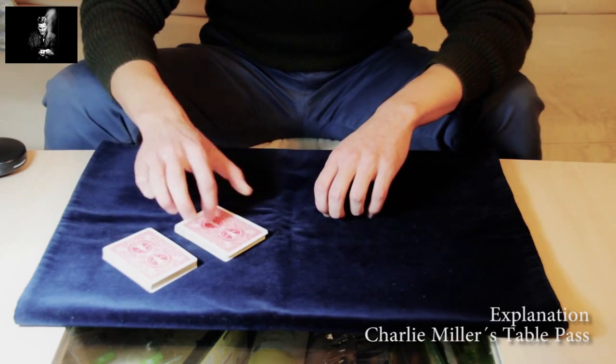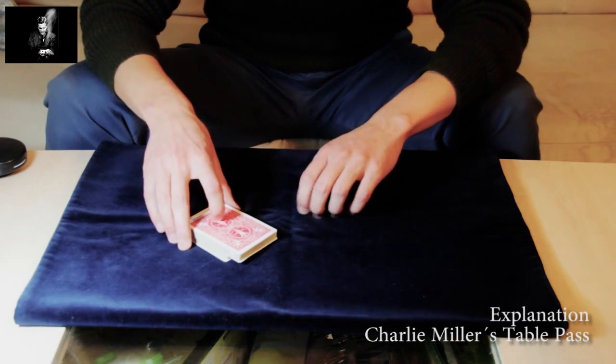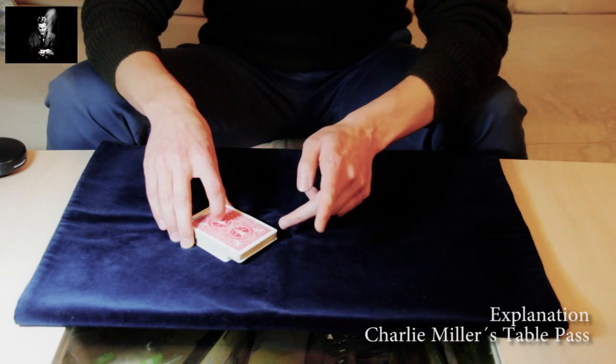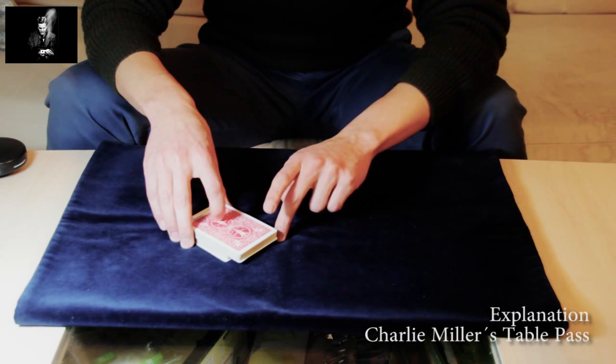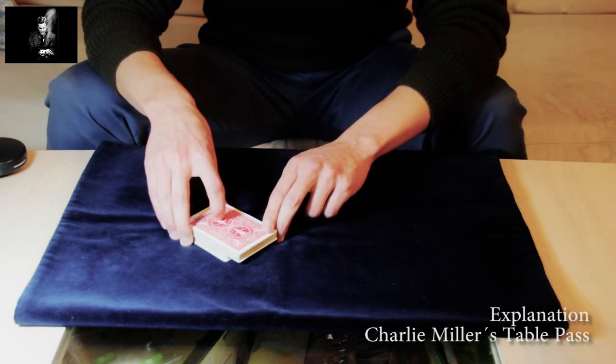Alright, so once again: outjogged, position of the finger, middle finger as pivot point, and the fourth finger.